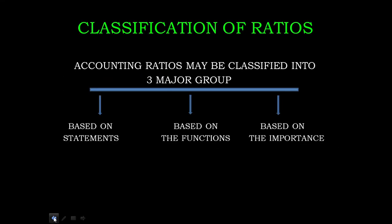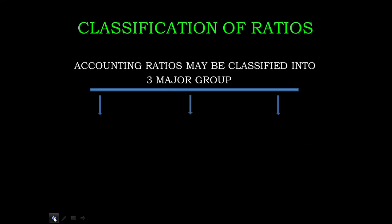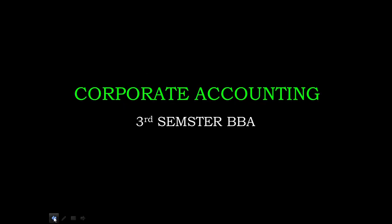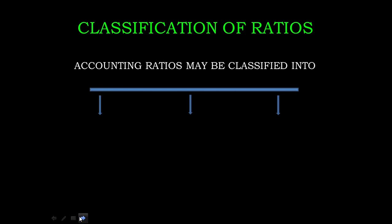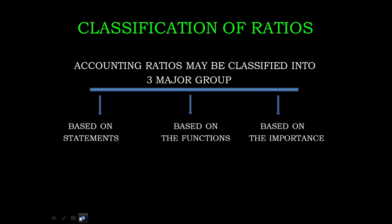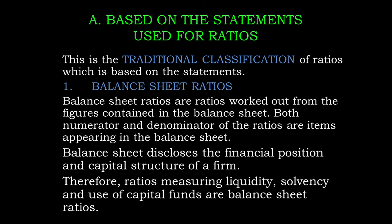We have covered the topic of the classification of ratios in Corporate Accounting — Ratio Analysis in this module. Ratios are classified into 3 major groups: based on statement (balance sheet ratios, income statement ratios, inter-statement ratios); based on functions (liquidity, solvency, profitability, turnover, market test ratios); and based on importance (primary and secondary ratios). Any doubts? Okay, thank you.